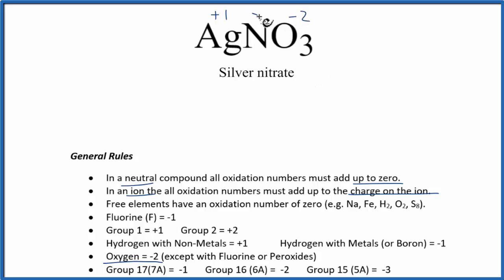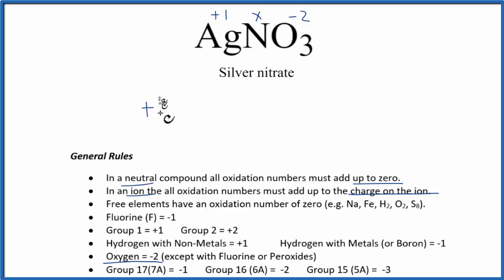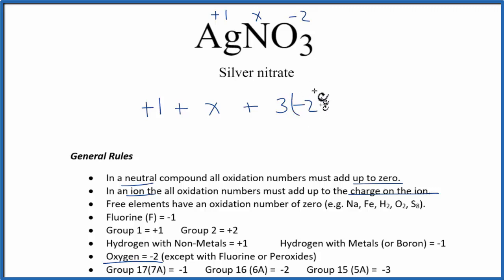We still don't know the nitrogen, so let's call that X. With this information, and the fact that all oxidation numbers in a neutral compound add up to zero, I can set up an equation to find the oxidation number for nitrogen in AgNO₃. So: silver (Ag) is plus one, plus X for nitrogen, plus three oxygen atoms each at minus two, all equals zero.